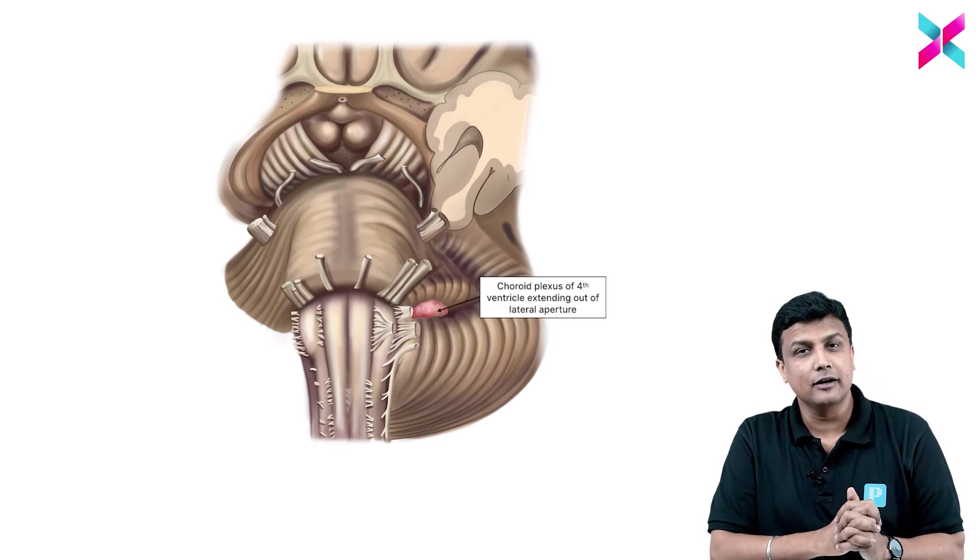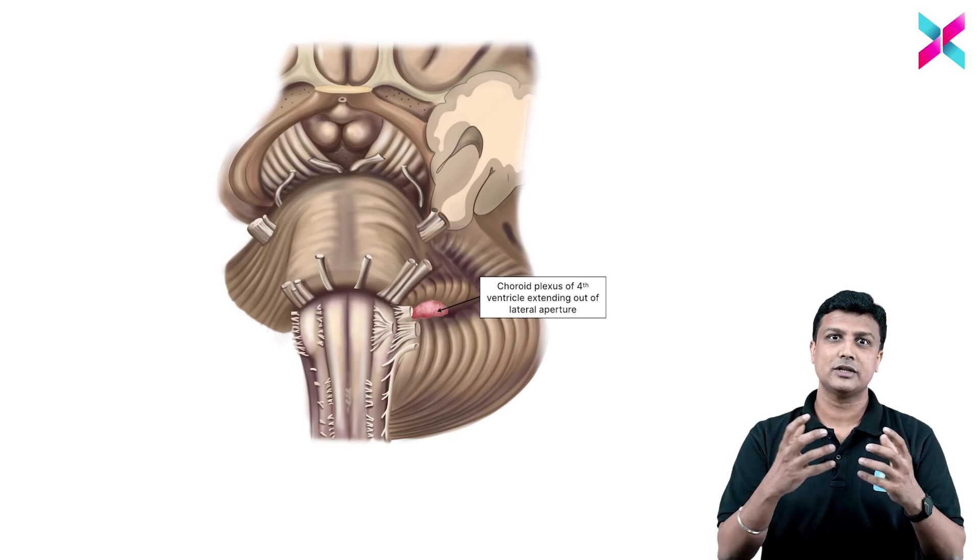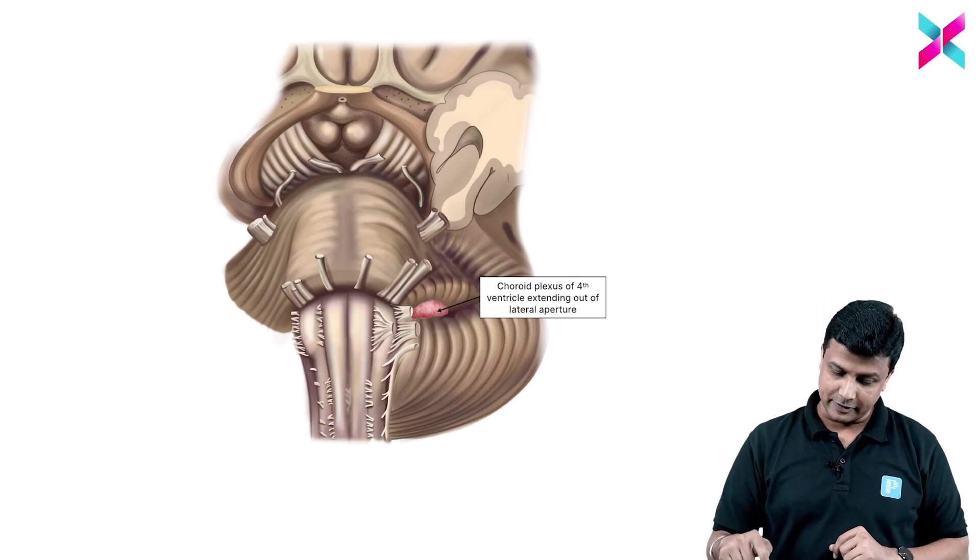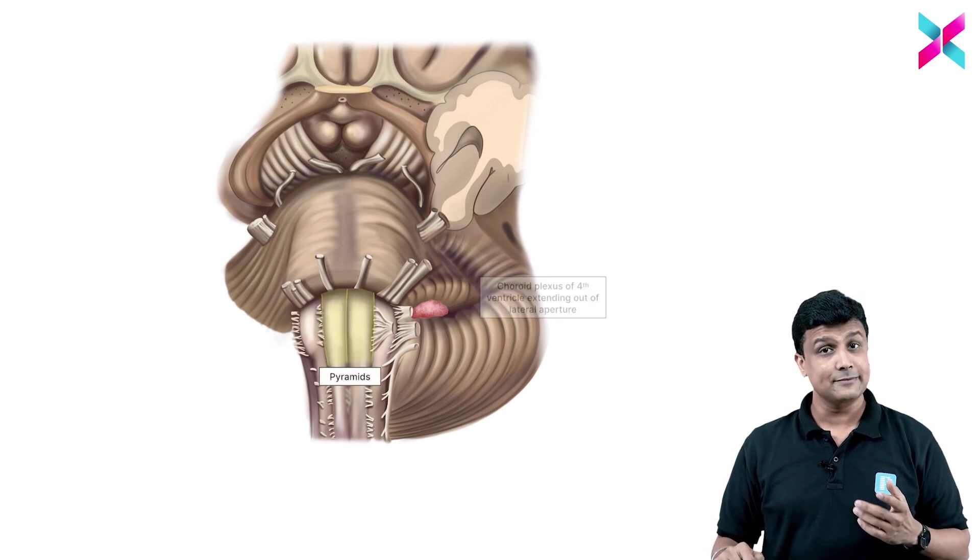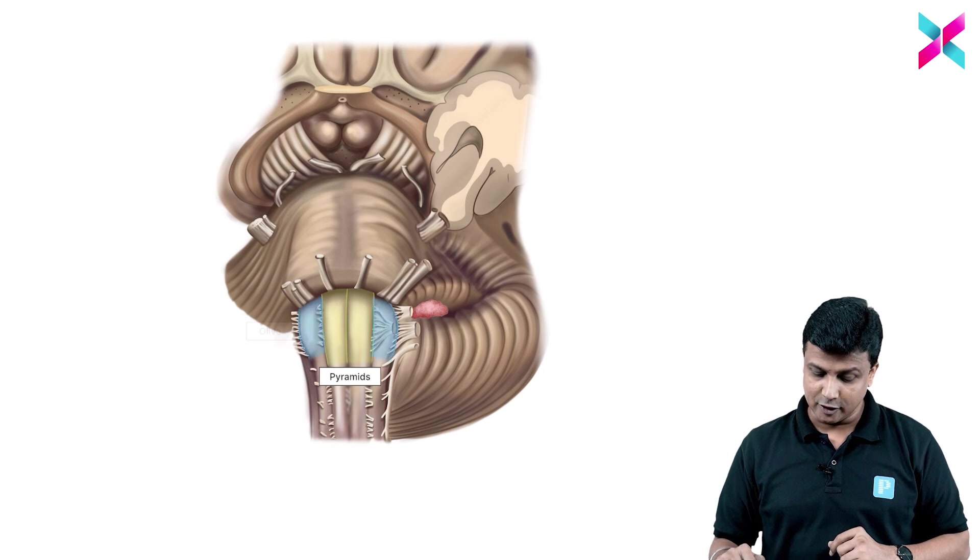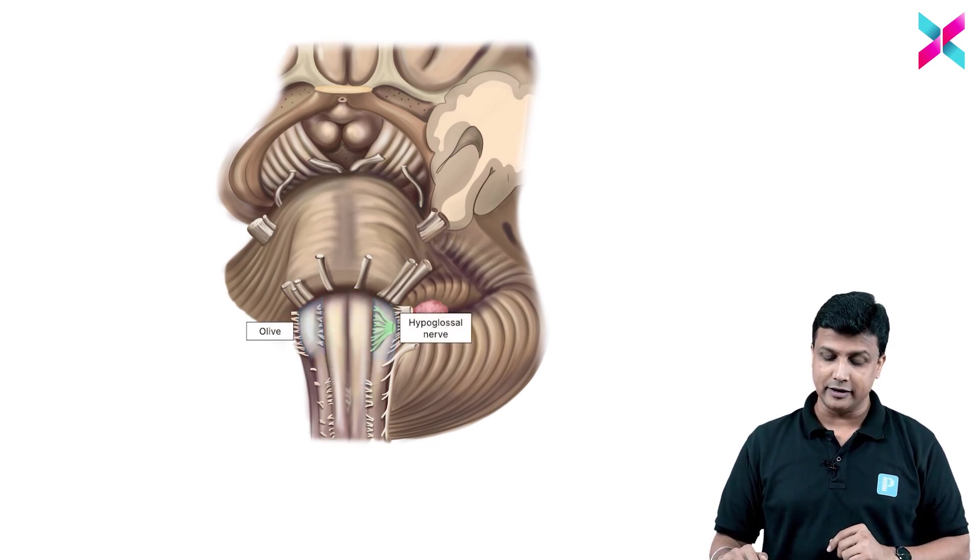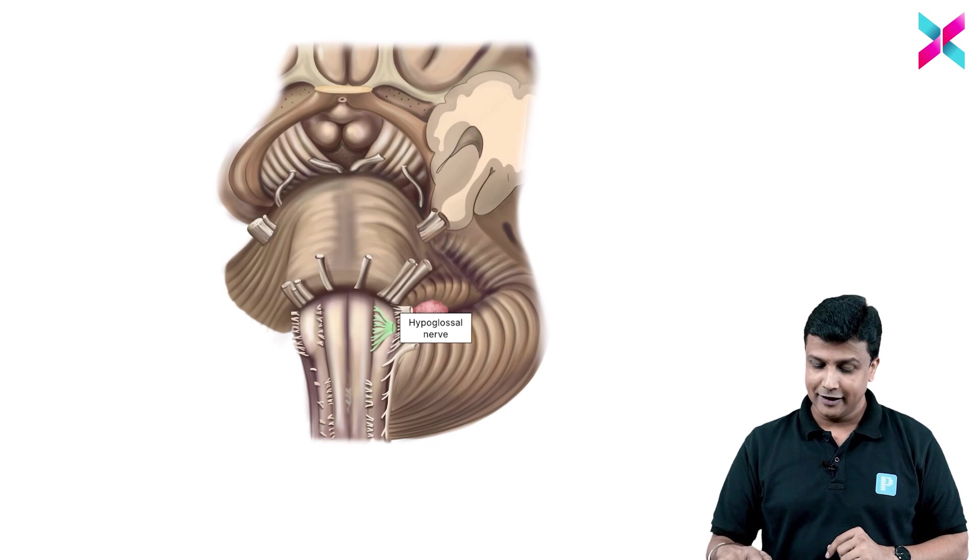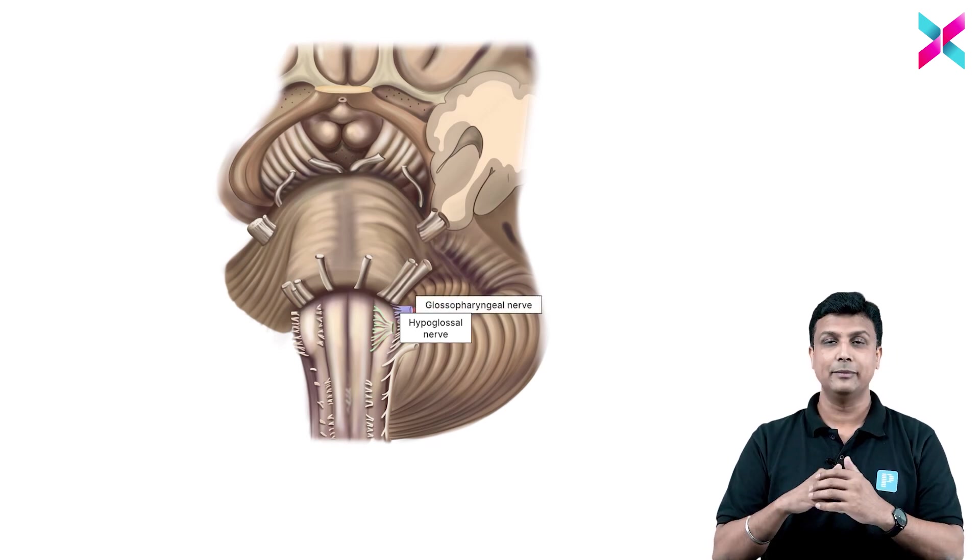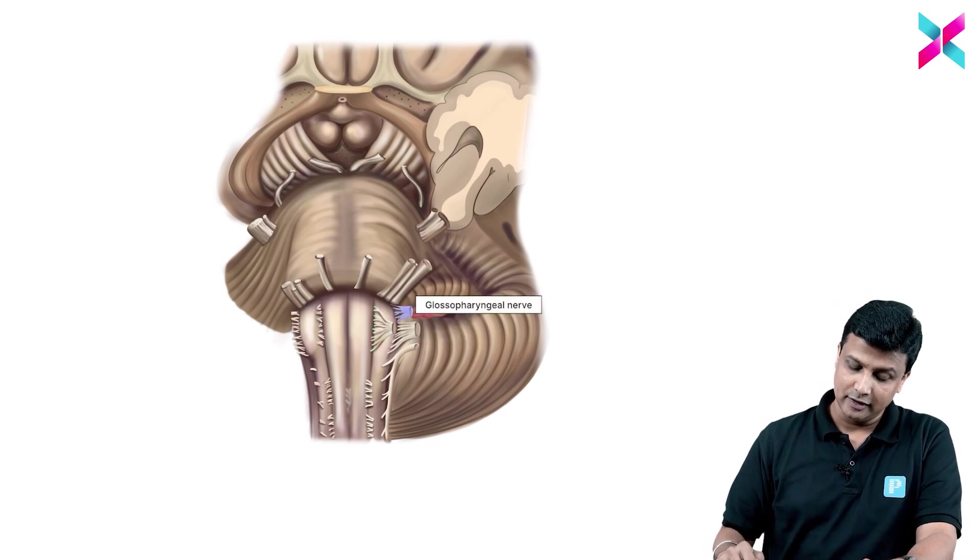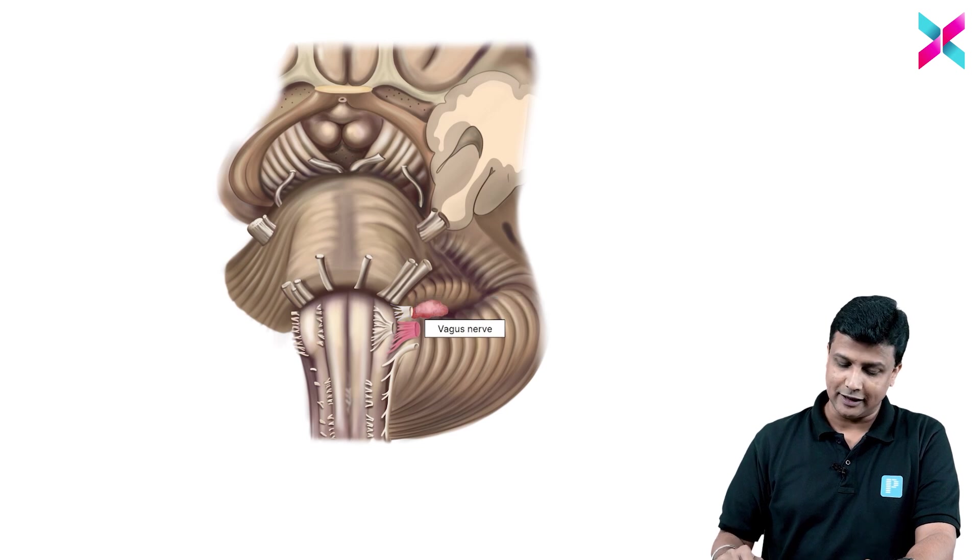This will be the choroid plexus of the fourth ventricle, which is actually coming out from the lateral aperture. And then this one here is pyramid, and then this one here will be the olive. Between the pyramid and olive there will be 12th nerve, hypoglossal nerve. And then lateral to the olive there will be glossopharyngeal nerve, ninth one, and then the vagus, and then the accessory nerve, that is 11th. So 9th, 10th, and 11th are coming out lateral to olive there.